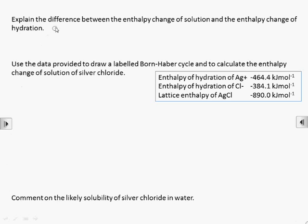Born-Haber cycles can be used to break down the various energy changes that take place when we try to dissolve an ionic substance in water. The overall energy change is called the enthalpy change of solution. That corresponds to taking one mole of an ionic substance and dissolving it in water.